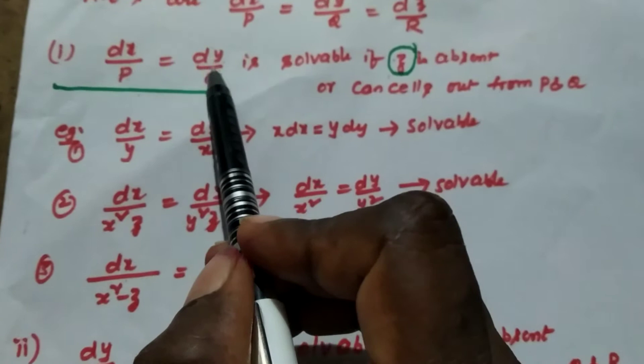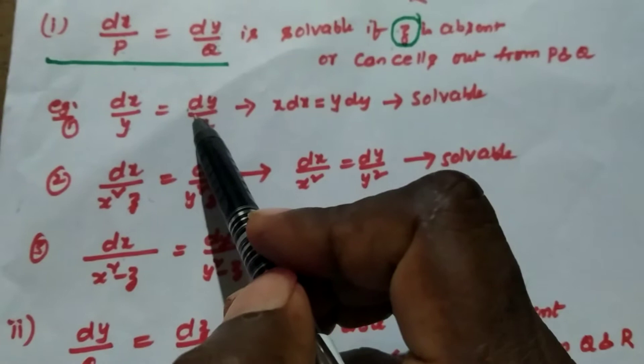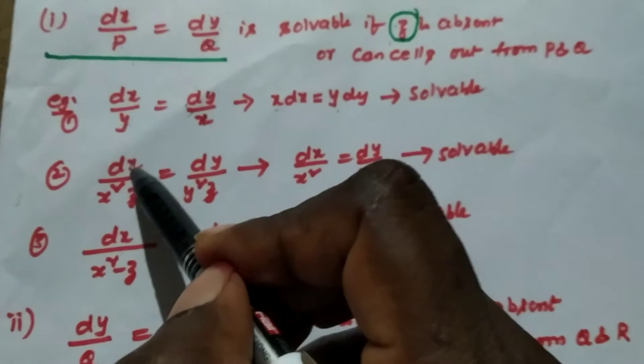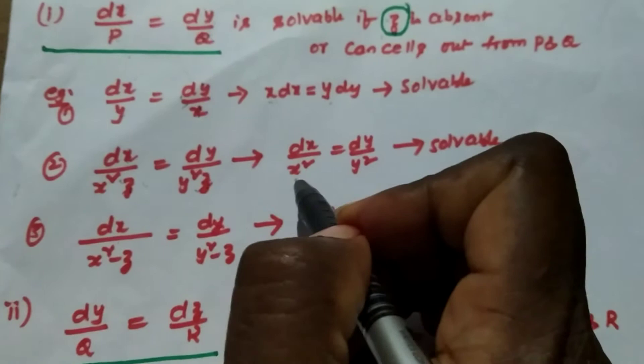I will explain this with the following examples. In the first example we have dx by y equal to dy by x. By cross multiplying, using the method of variable separable, we can solve it. In the second case, the denominators of dx and dy both contain z, but we can cancel out z from these two denominators, so we can find the solution.